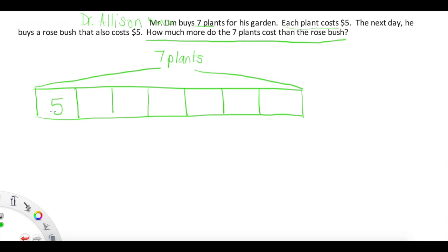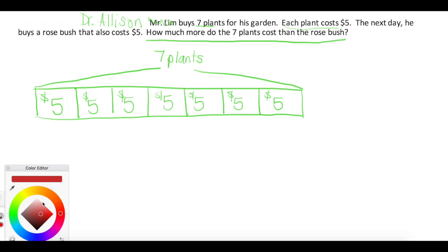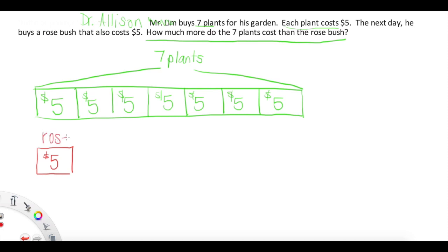We are also given this information. Each plant costs five dollars. So, as you can see, I'm going to go ahead and label within each piece of our tape diagram the fact that each of our seven plants cost five dollars. Okay, the next day he buys a rosebush that also costs five dollars. So, let's go ahead and make another tape diagram. This one's going to look very different. This is just going to consist of one five dollar rosebush.